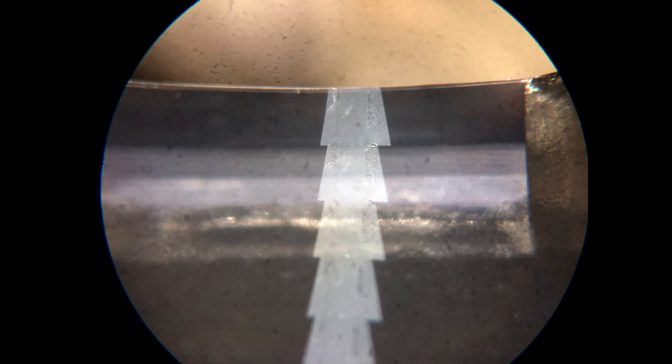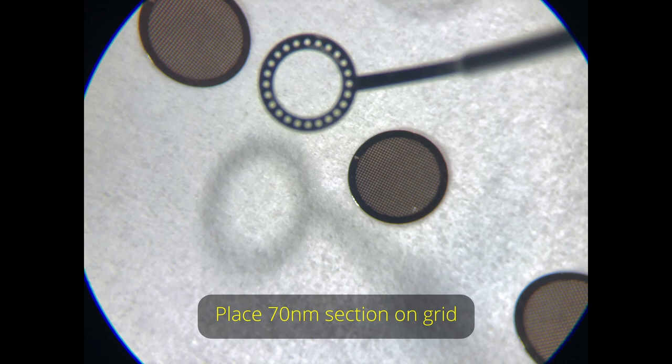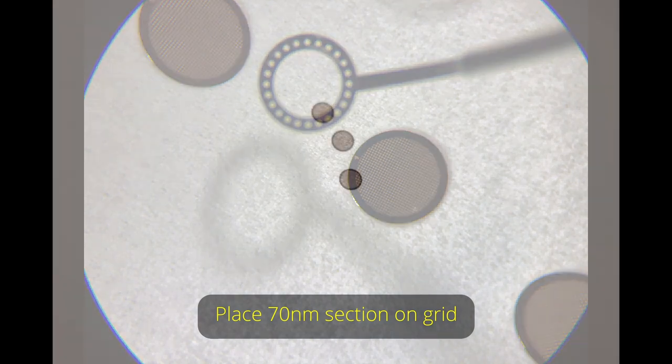So then we're going to separate these sections, pick them up with our loop, and place them on grids.